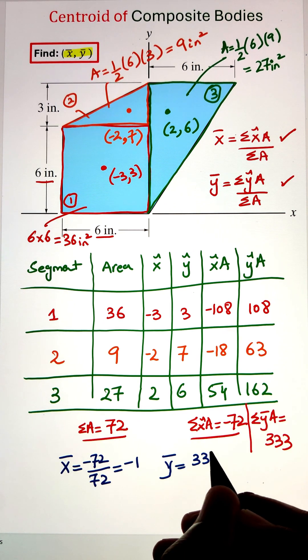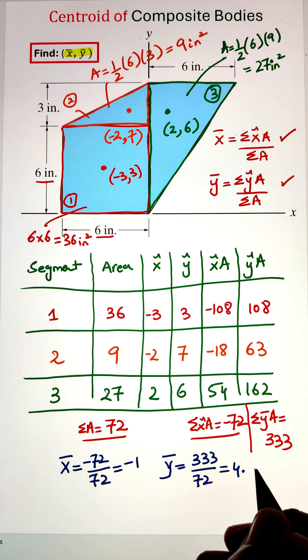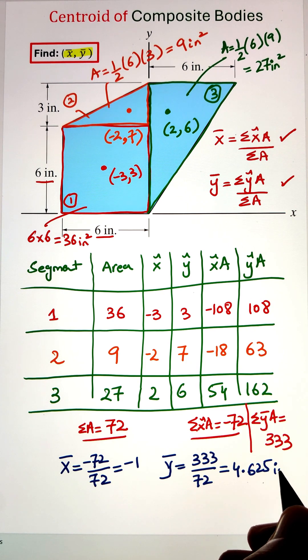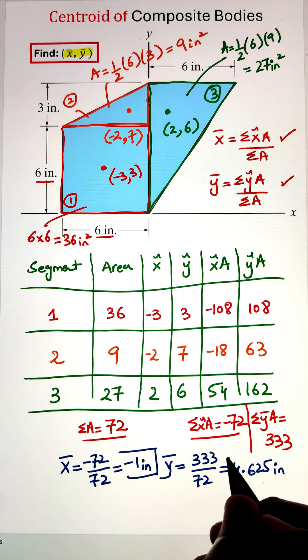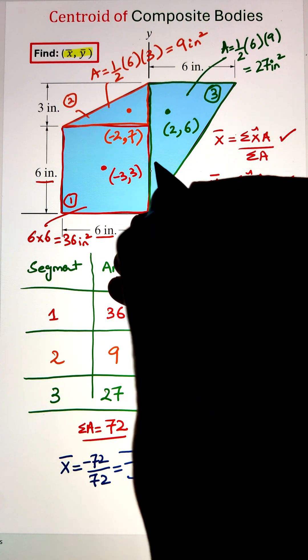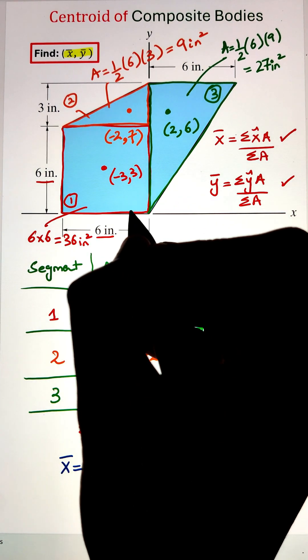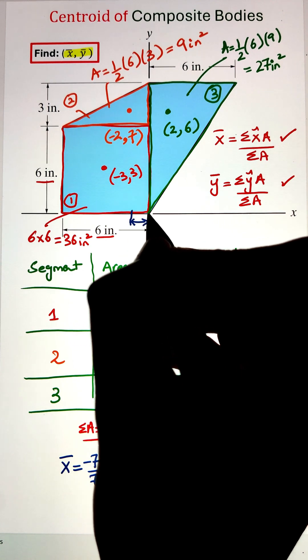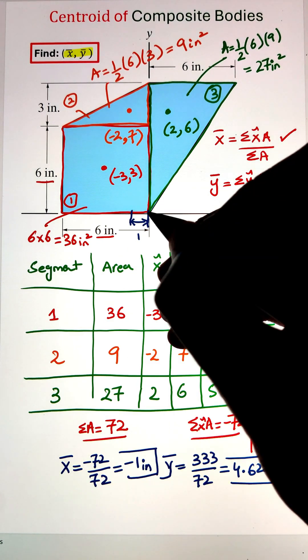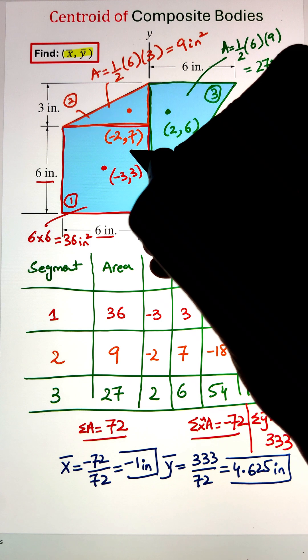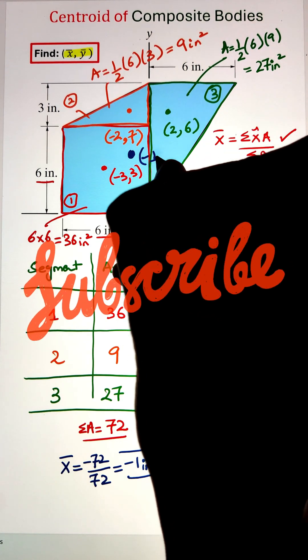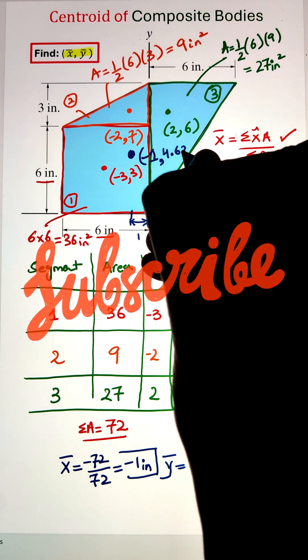We can also locate the values of x̄ and ȳ on the composite structure. Since we are going -1 inch along the x direction, I'm moving to the left 1 inch, and then moving upward 4.62 inches. So this blue dot is the location of the centroid of our composite structure.